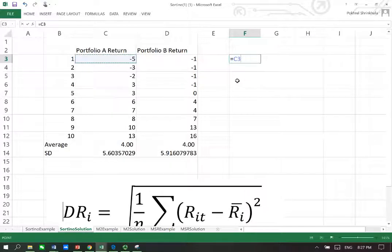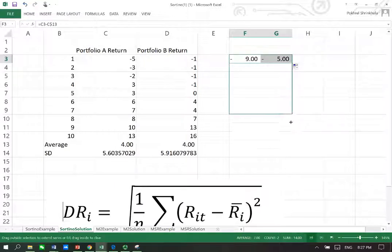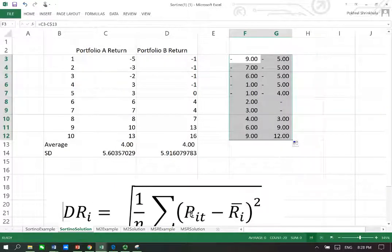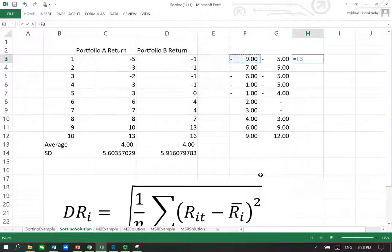First thing is portfolio A return in period 1 take away this number 4, so we get minus 9. In order for me to allow copy, I'm going to lock the average return for the portfolio. I'm going to lock the row number C13. I drag it on this side and pull it down all the way. I have RIT minus RI computed for both my portfolios.